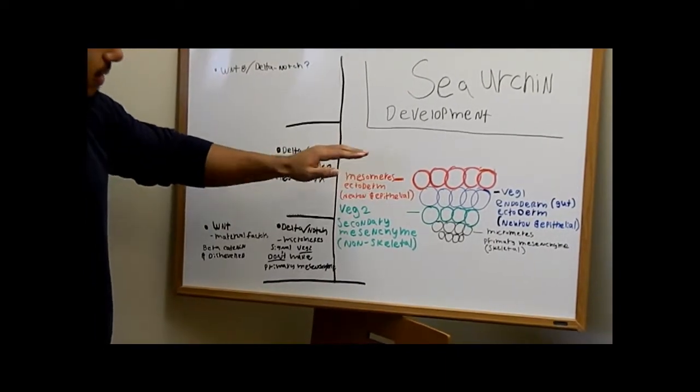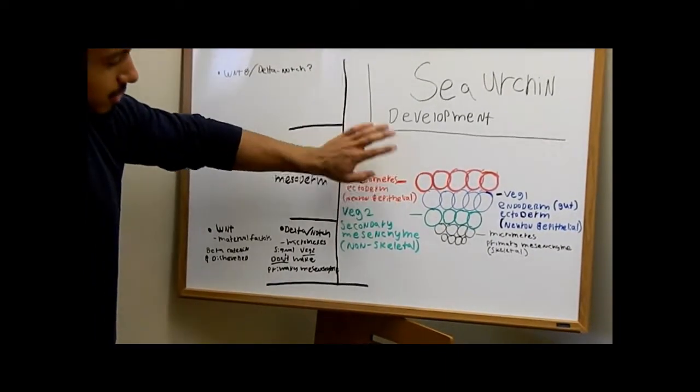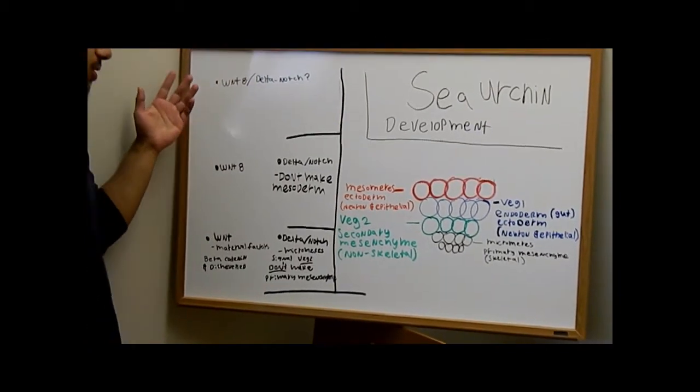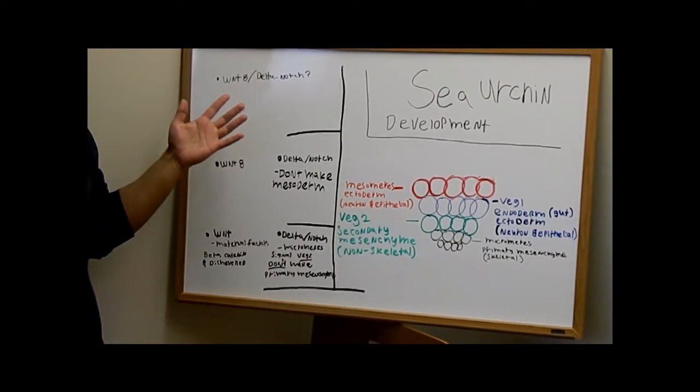And then we have the pathway between veg1 and mesomeres, and we actually don't have enough information to know whether it's Wnt8 or delta-notch. Thank you.